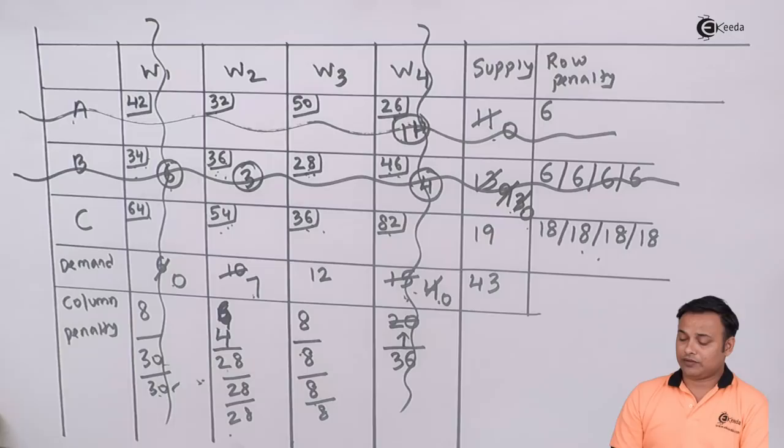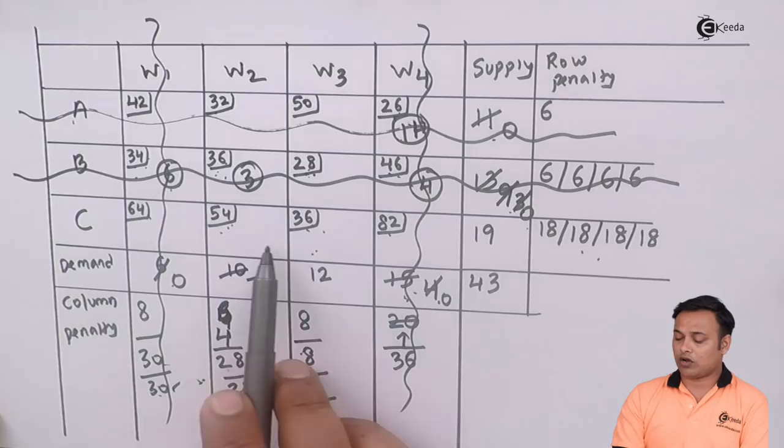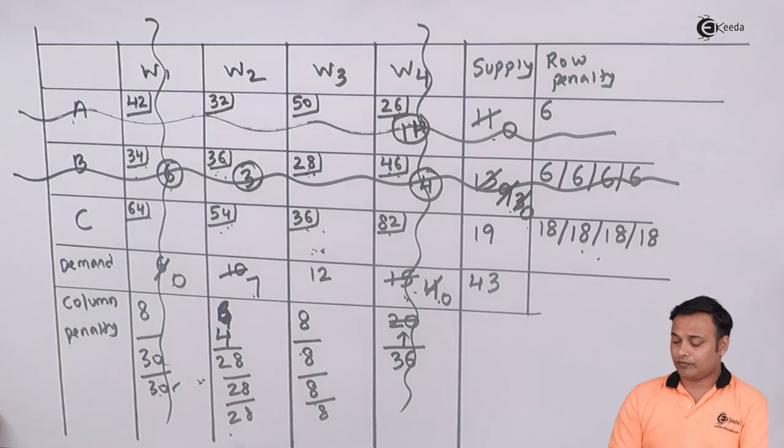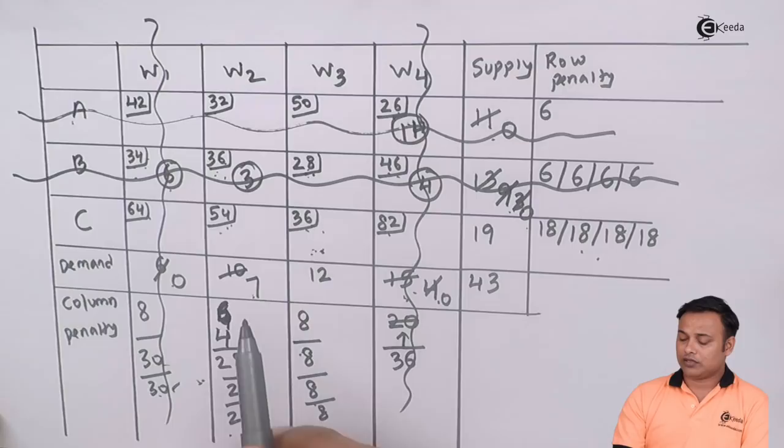My highest penalty at this stage is 28, where the lowest cost is 36. Supply is 3, demand is 10. I'll supply 3. 3 minus 3 is 0, and 10 minus 3 is 7. Since I got a zero, now I have to cancel this second row. Now we are left with only two columns and one row.